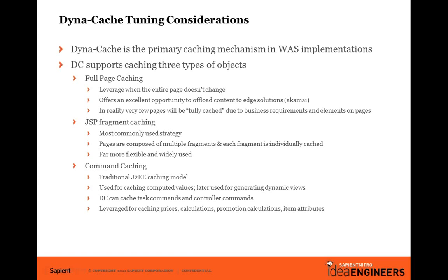The next type is JSP fragment caching. Every JSP is made up of multiple fragments, and this is the most commonly used caching technique. A good example is a header and footer. If you use your header on all pages and it has a lot of processing logic — such as listing all categories — caching it in Dynacache means it doesn't need to reconstruct itself as the user moves from page to page. This saves page response time significantly.